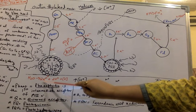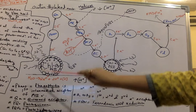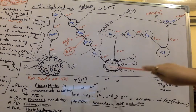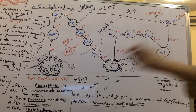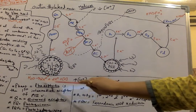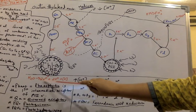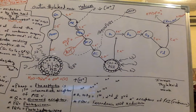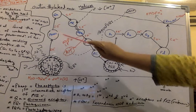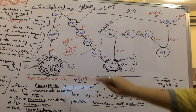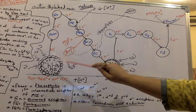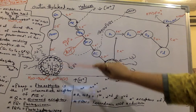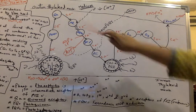Two electrons released during the process of photo-oxidation of water will travel the whole cycle without changing in amount. Two electrons will enter the reaction center of PS2 and move into the first intermediate electron acceptor, Pheophytin. So Pheophytin is now reduced and the reaction center of PS2, P680, is now oxidized, because electrons are released from PS2 to Pheophytin.